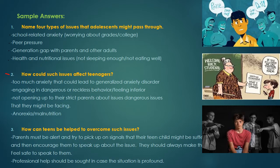Number two, peer pressure: a lot of peer pressure could lead to dangerous or reckless behavior, or to feeling inferior to their peers. Three, the generation gap — if parents are strict and don't have a communicative relationship with their children, the teenager might not open up about dangerous issues. They may fall into more danger, afraid of opening up because they fear the punishment more than what will actually happen to them. This is a common issue.